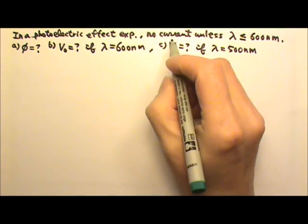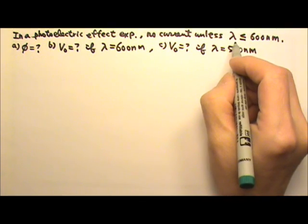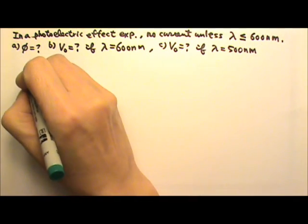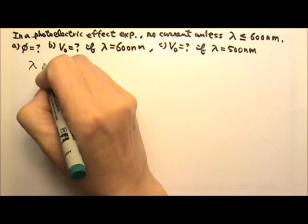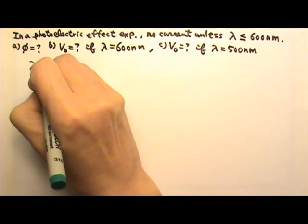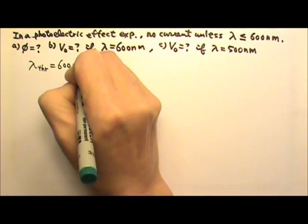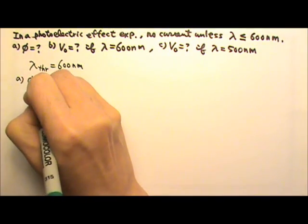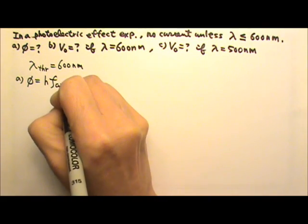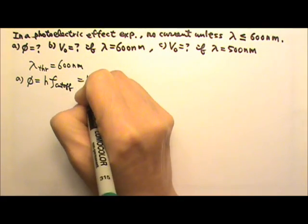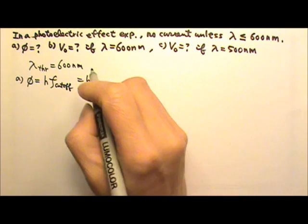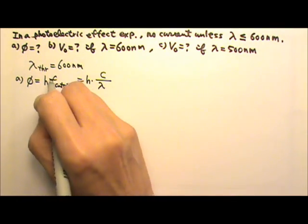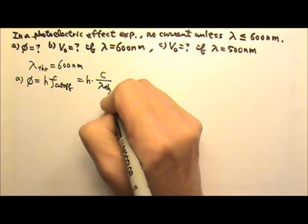If no current is produced unless the wavelength is less than or equal to 600 nm, that means 600 nm is the threshold wavelength. For part a, the work function equals hf at the cutoff frequency. The cutoff frequency is related to the threshold wavelength by f = c / λ, where λ is the threshold wavelength.